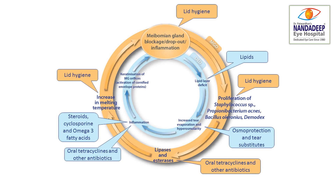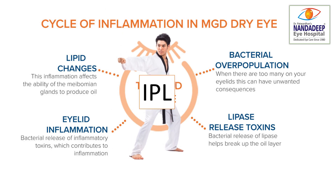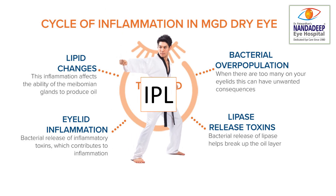So if the patient has dry eye even before cataract surgery, we have to make sure that the ocular surface is stabilized using different approaches, including tear substitutes, steroids, tetracyclines, and antibiotics. Another good device which stops the inflammation cycle of MGD dry eye is IPL — intense pulse light therapy — and I also use it quite frequently.